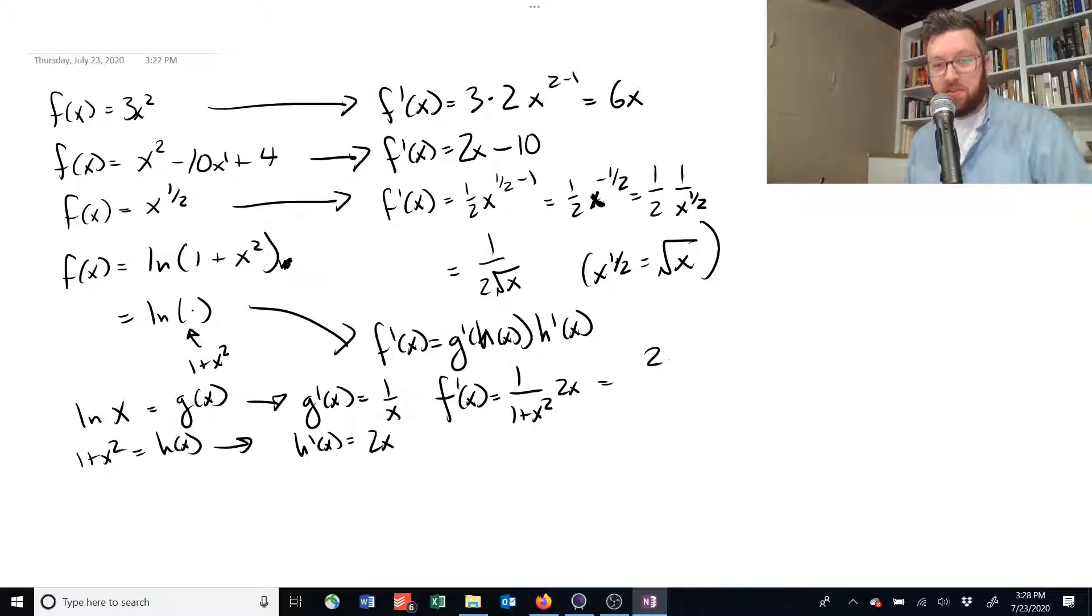So, what we end up with is 2x over 1 plus x squared. And that is the derivative of that guy. All right. Thanks.